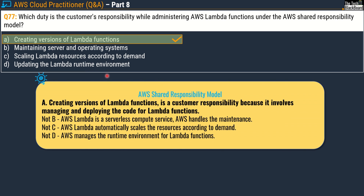Under the AWS shared responsibility model, creating versions of Lambda functions is the customer's responsibility because it involves managing and deploying the code for the Lambda function. Option B is not chosen because AWS Lambda is a serverless compute service — AWS handles the maintenance. Option C is not chosen because AWS Lambda automatically scales resources according to demand. Option D is not chosen because AWS manages the runtime environment for Lambda functions. You can check more details in the documentation referenced.